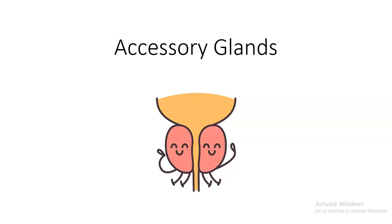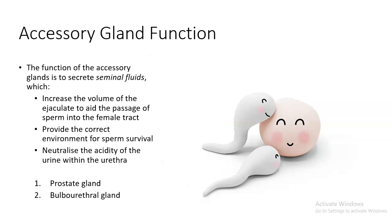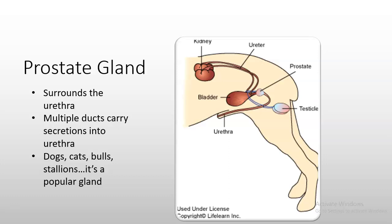Now we discuss accessory glands. Accessory gland functions: to secrete seminal fluids that increase ejaculate volume to aid sperm passage into the female tract, to provide the correct environment for sperm survival, and to neutralize the acidity of urine within the urethra. The accessory glands are the prostate gland and the bulbourethral gland. The prostate is located very close to the neck of the bladder, surrounding the base of the urethra, and is present in dogs, cats, bulls, stallions, and humans.